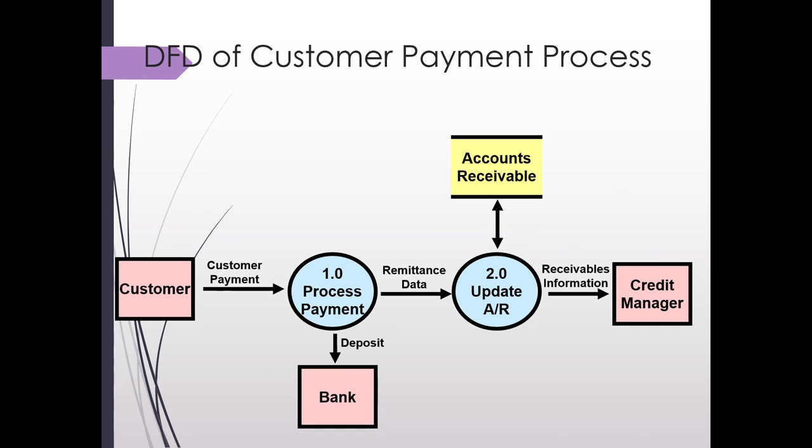So this is just one example of a data flow diagram of the customer payment process. We have a customer sends in a payment and then we process the payment. As you notice, this is a very high level description. From that step we send a deposit to the bank. Remittance data is also sent to the next process, which is update accounts receivable. We see that data is stored in the accounts receivable data storage and then a report of receivables information is sent to the credit manager.